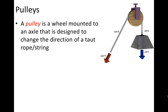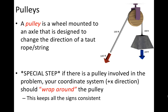Very common in problems involving systems of connected objects are pulleys. A pulley is a wheel mounted to an axle designed to change the direction of a taut string or rope. When you have a problem that involves a pulley, there's a very important step you must remember: you have to wrap your coordinate system around the pulley. This keeps the signs consistent so that two objects with the same magnitude of acceleration don't end up with opposite signs, which makes problem solving very difficult.